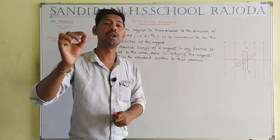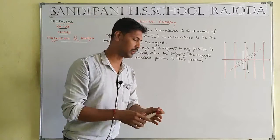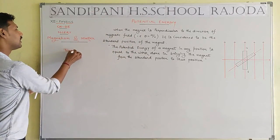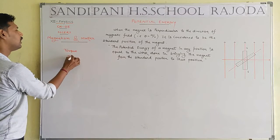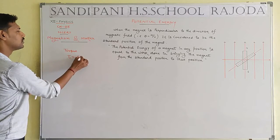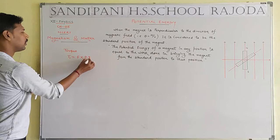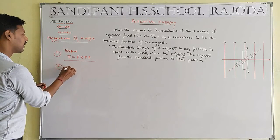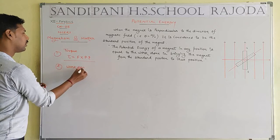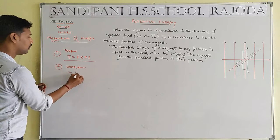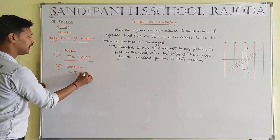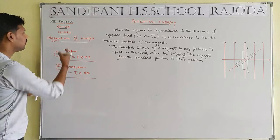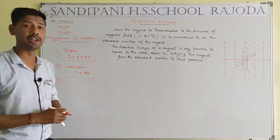In Class 12, chapter number 5 starts with the first derivation: torque. What is the meaning of torque? Let's revise - torque, that means tau, is equal to any one force into perpendicular distance. Second is work done - work done equals force into displacement. Now we are taking the third derivation related to potential energy.